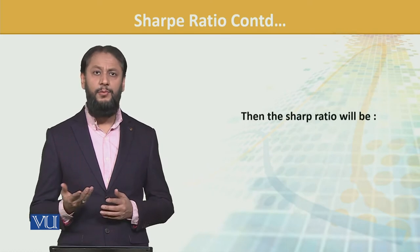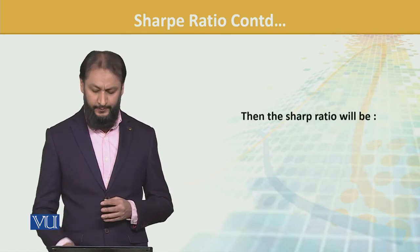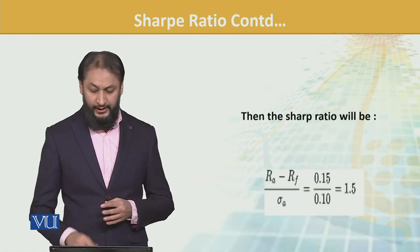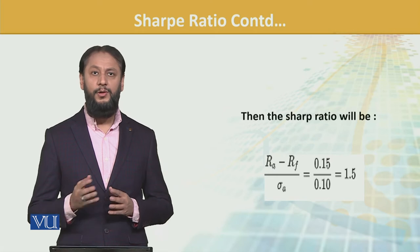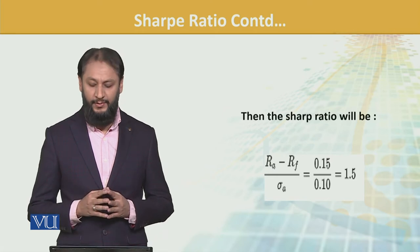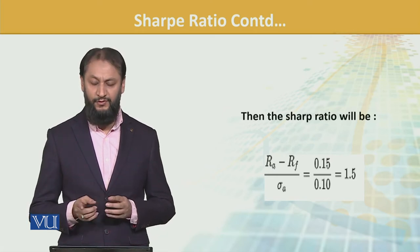The Sharpe ratio is 0.15 divided by 0.10, which gives 1.5.